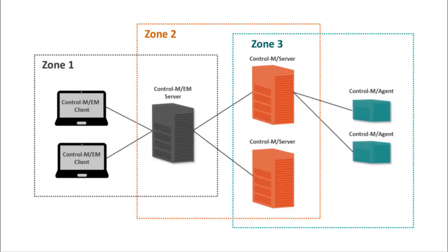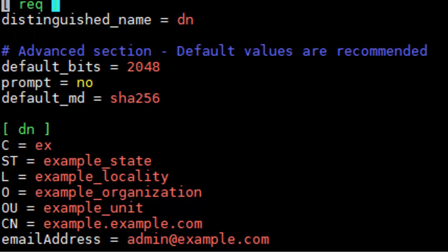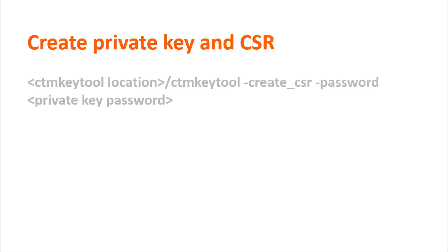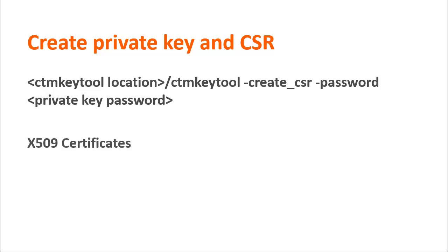You must configure SSL for each Control-M component. First, you need to edit the fields in the CSRParams.CFG file for each Control-M component. In the DN section, change the value of these fields to the required values. The CN parameter must be the FQDN of each Control-M component. Next, you need to create the private key and certificate signing request file by running the CTM key tool utility. Use the certificate signing request file to obtain the certificate and possibly the certificate chain file from an external recognized CA. All certificates must be valid X509 certificates.